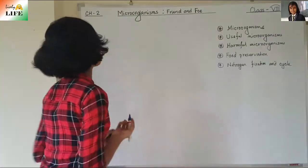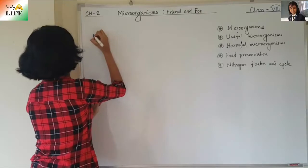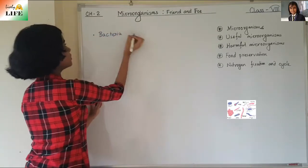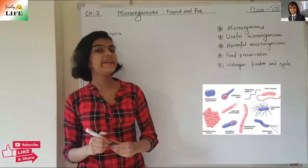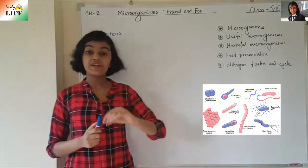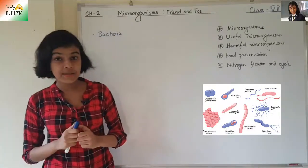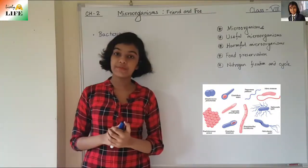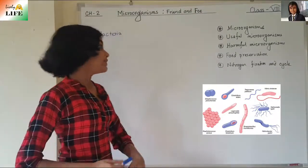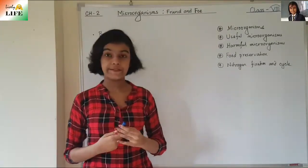Bacteria is a type of microbe that varies in shape. They can be rod-shaped, spiral-shaped, or spherical-shaped. There are many different types of bacteria.